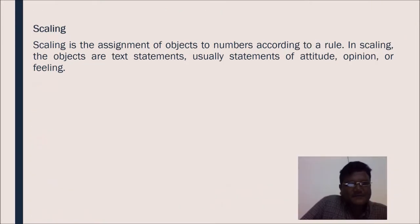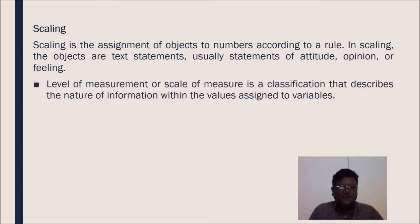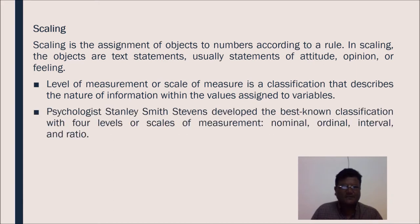Scaling is the assignment of objects to numbers according to a certain rule. In scaling, the objects are text statements, usually statements of attitude, opinion or feeling. Levels of measurement or scale of measure is a classification that describes the nature of information within the values assigned to variables. Psychologist Stanley Smith Stevens developed the best known classification with four levels of scales of measurement: nominal, ordinal, interval and ratio.